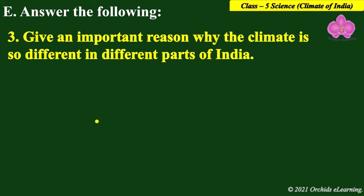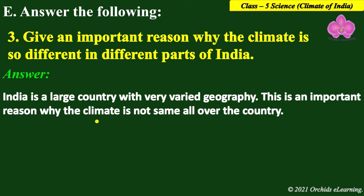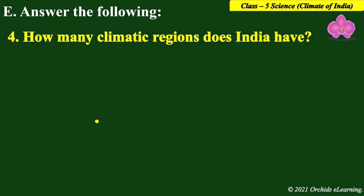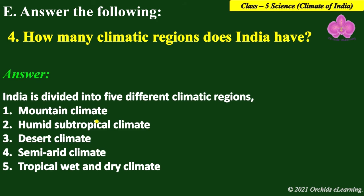Next: give an important reason why the climate is so different in different parts of India. Answer: India is a large country with very varied geography, and this is an important reason why the climate is not the same all over the country. India is divided into five different climatic regions: mountain climate, humid subtropical climate, desert climate, semi-arid climate, and tropical wet and dry climate.